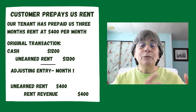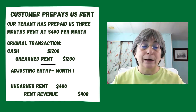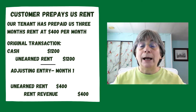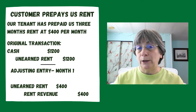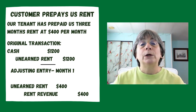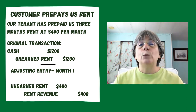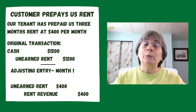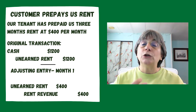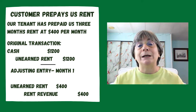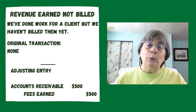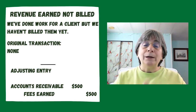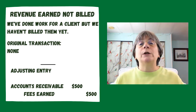We've now earned that rent, so we're moving it from our liability into our revenue account. If we did not do that and just left it sitting in the unearned rent account, we would not have an accurate picture of our business — no revenue on the income statement, and an incorrect liability on the balance sheet. When we do an adjusting entry, we're making sure things are in the categories they need to be in. Those were two examples of deferrals where the cash came before. Now let's look at an example where the cash comes after — an accrual.